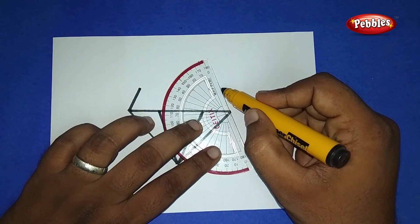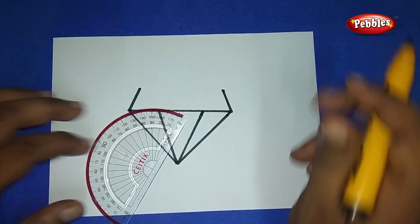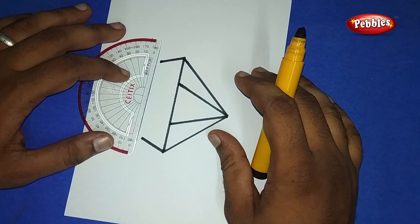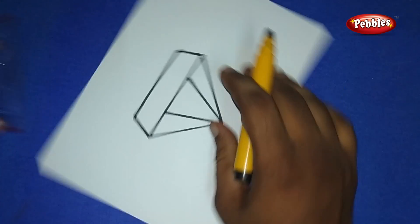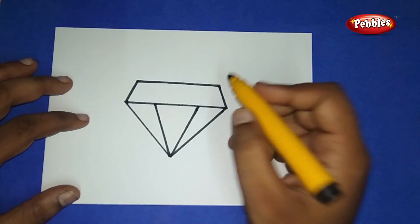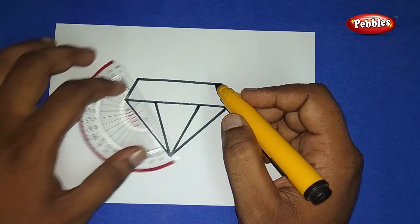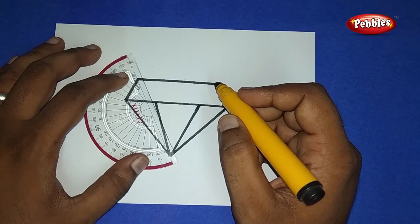Both slanting lines should be joined using a straight line at the top. Now again, we have both corners at the top, and join